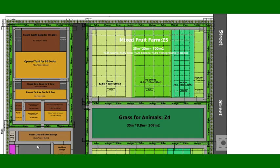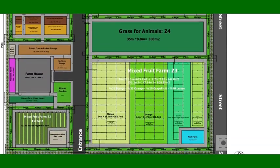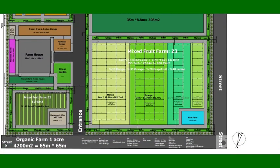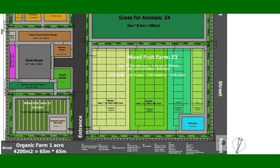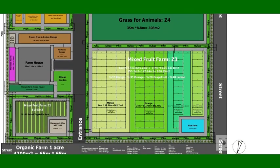Hello, today we have a new design for one akara. It is about 4200 square meters and the dimension is 65 meters multiplied by 65 meters. This design will be very nice for you. As you see here, this is 4200 square meters, 65 by 65. In this design, we divided the one akara into seven zones.